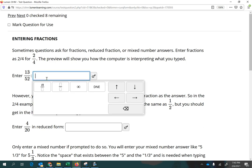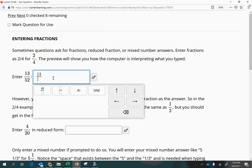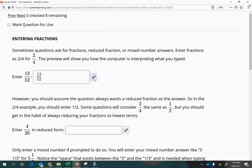Here, we're told to enter 13 divided by 52. And we're not told to reduce that, so we're going to leave it like it is. You could have also reduced it, and that would still be marked correctly.